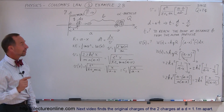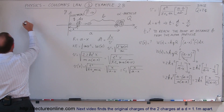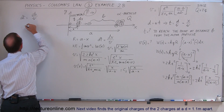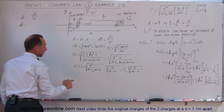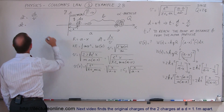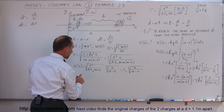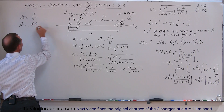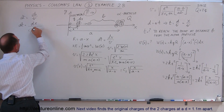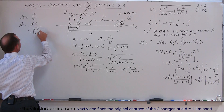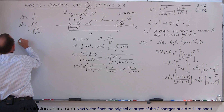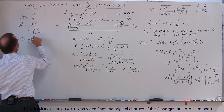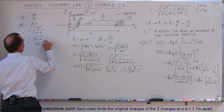Now we can find the time using dt equals dx over the velocity, so dt is equal to dx divided by c1 times the square root of x over (a minus x). Finally, dt equals 1 over c1 times the square root of (a minus x) divided by the square root of x, times dx.